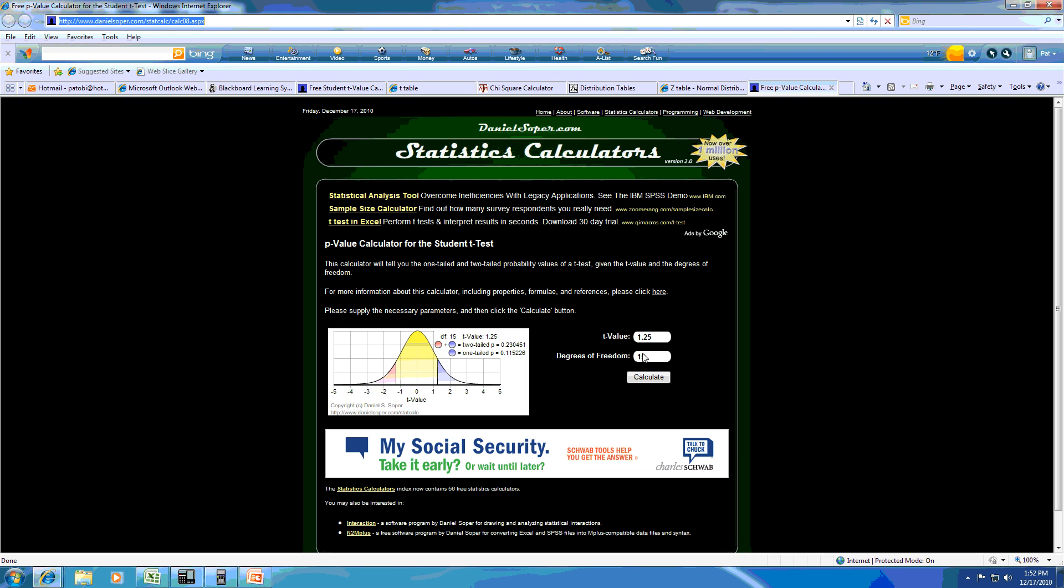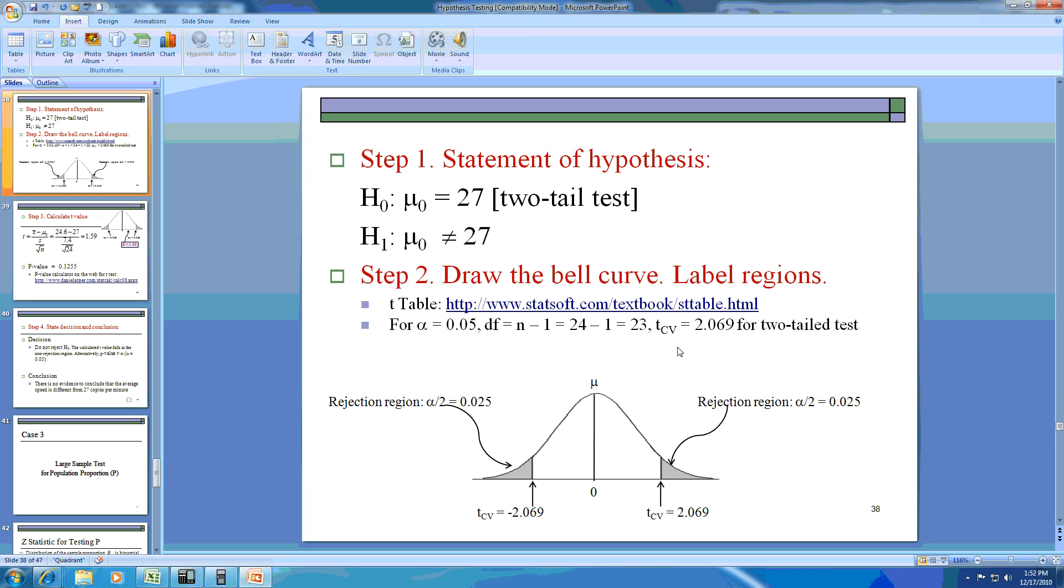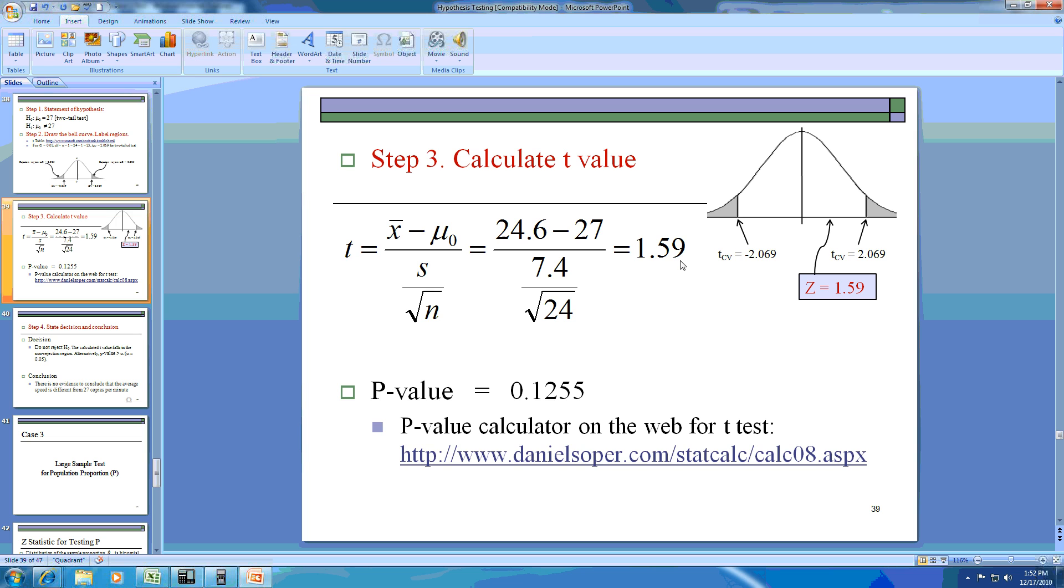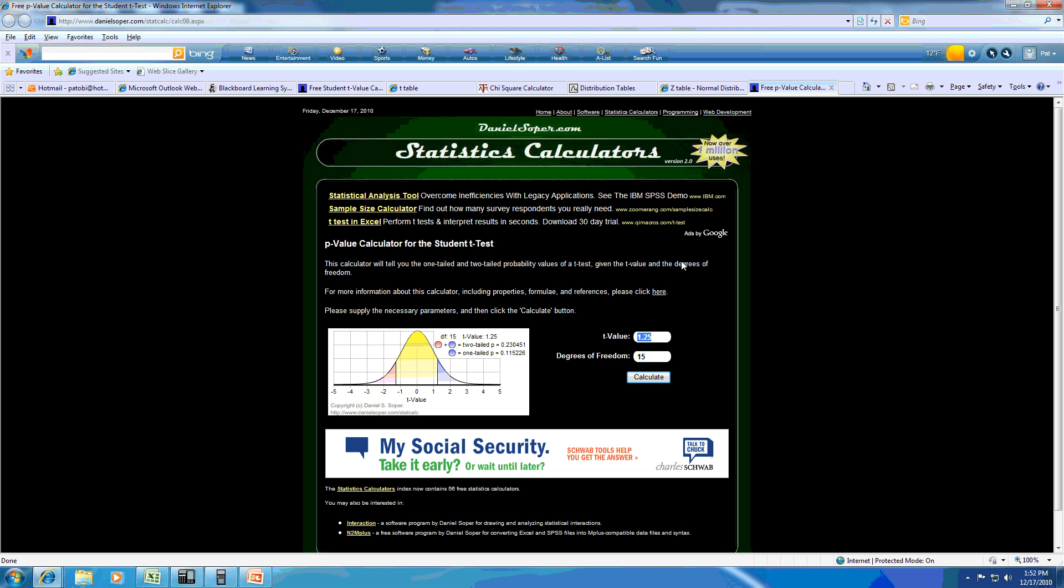Here we are typing the calculated value of t for our study, which as you see is 1.59. We type in 1.59 for degrees of freedom, we type in 23, and then we calculate.